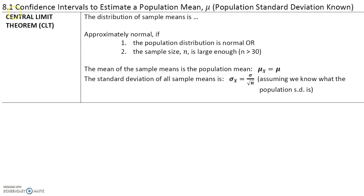In section 8.1, we will use confidence intervals to estimate a population mean. Let's talk about the central limit theorem, which we learned in section 7.1. The distribution of sample means is approximately normal if the following two conditions are met: the population distribution is normal, or the sample size n is large enough, greater than 30.